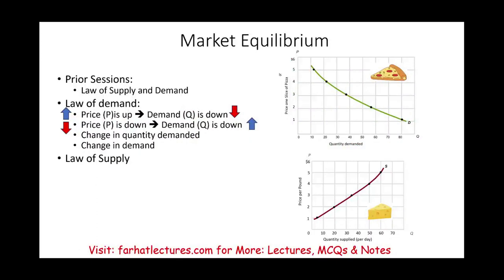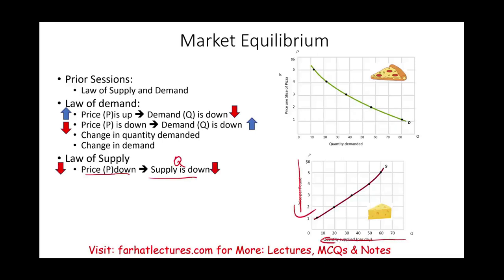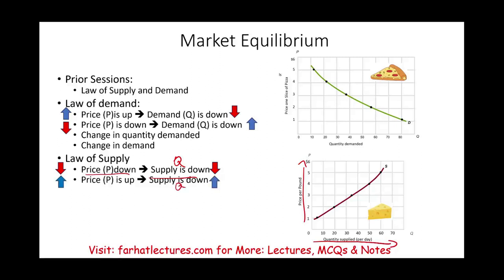Then we discussed the law of supply. Basically it states: if the price of our product that we are providing is down, we have no incentive to supply. Therefore the supplied quantity is down. If the prices are up — if suddenly there's more demand — if the prices are up for what we are providing, we are willing to supply and produce more of the quantity. Simply put, this is a positive relationship between price and supply.